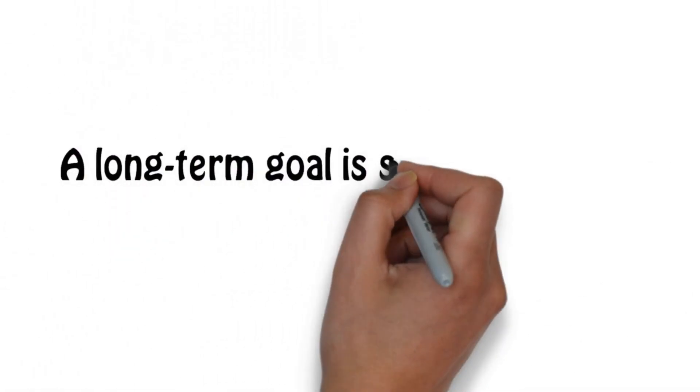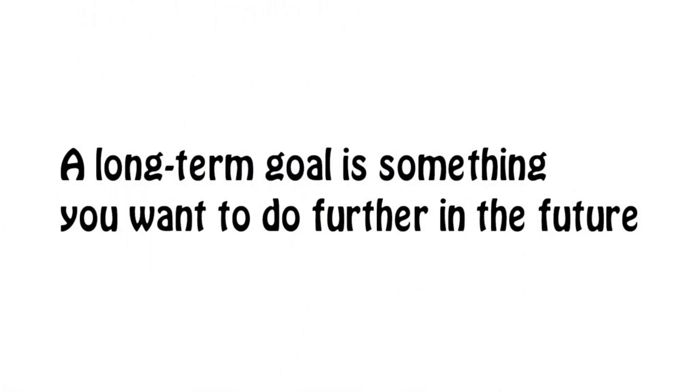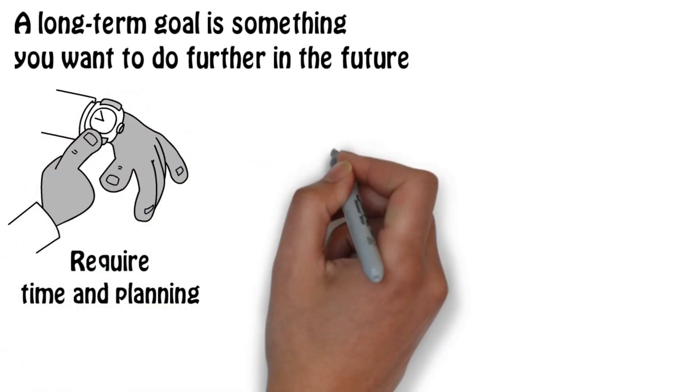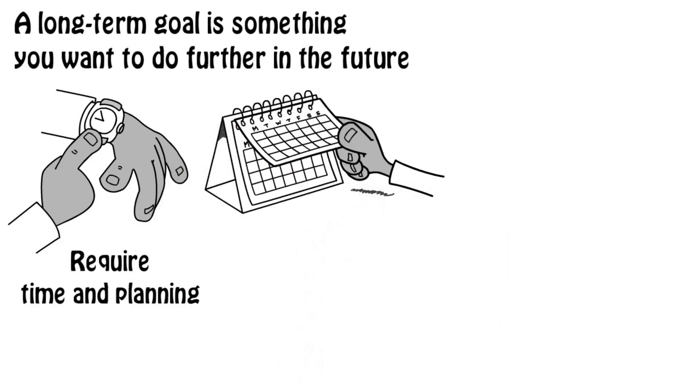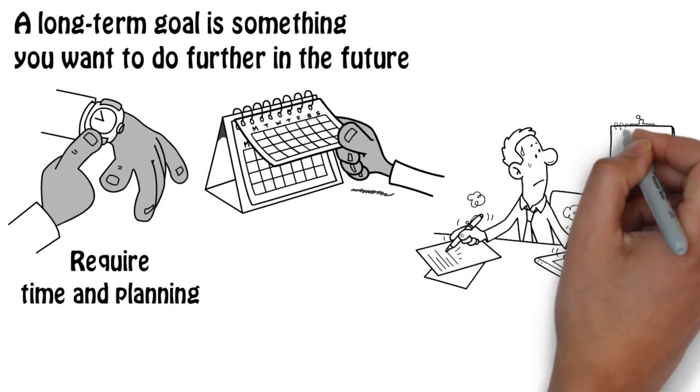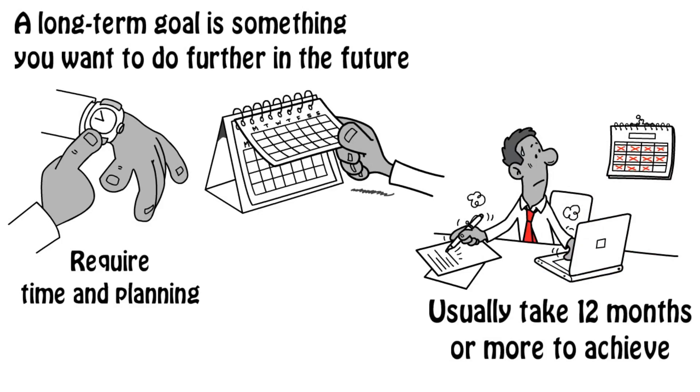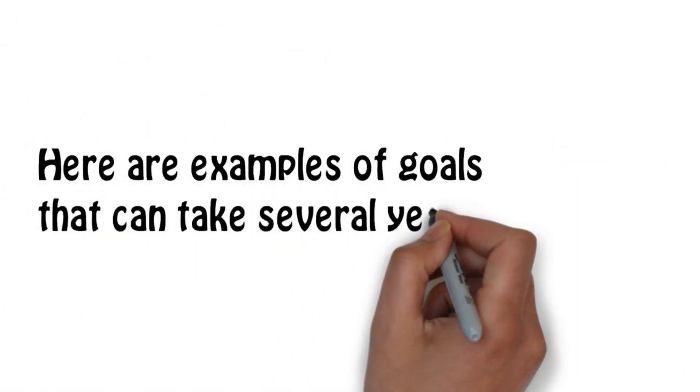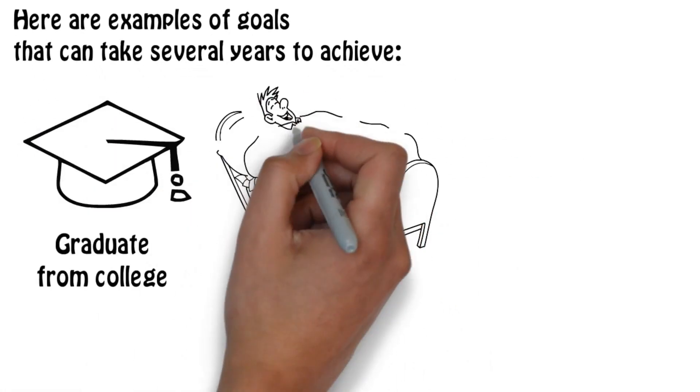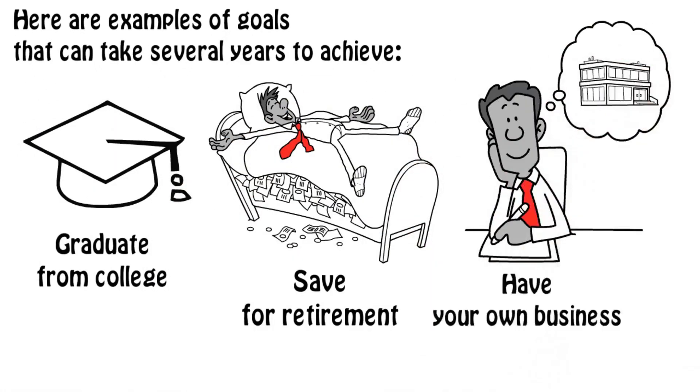A long-term goal is something you want to do further in the future. Long-term goals require time and planning. They are not something you can do this week or even this year. Long-term goals usually take 12 months or more to achieve. Here are some examples of goals that take several years to achieve: graduate from college, save for retirement, have your own business.